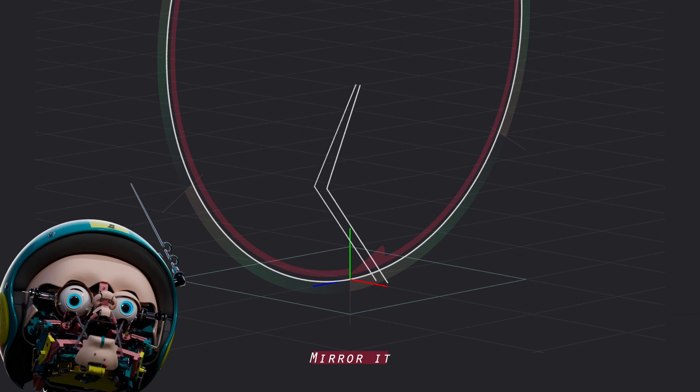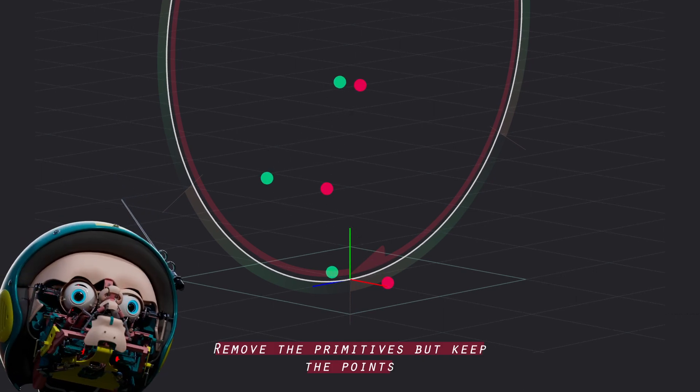Now draw a rubbish leg. Mirror it. Remove the primitives, but keep the points.